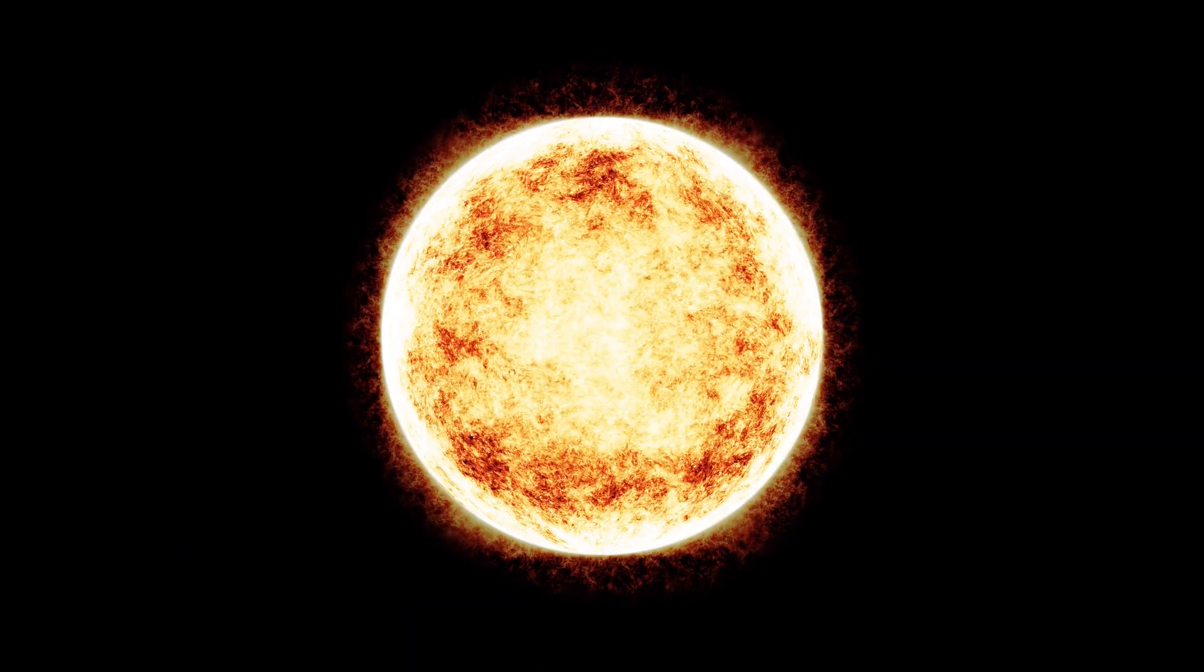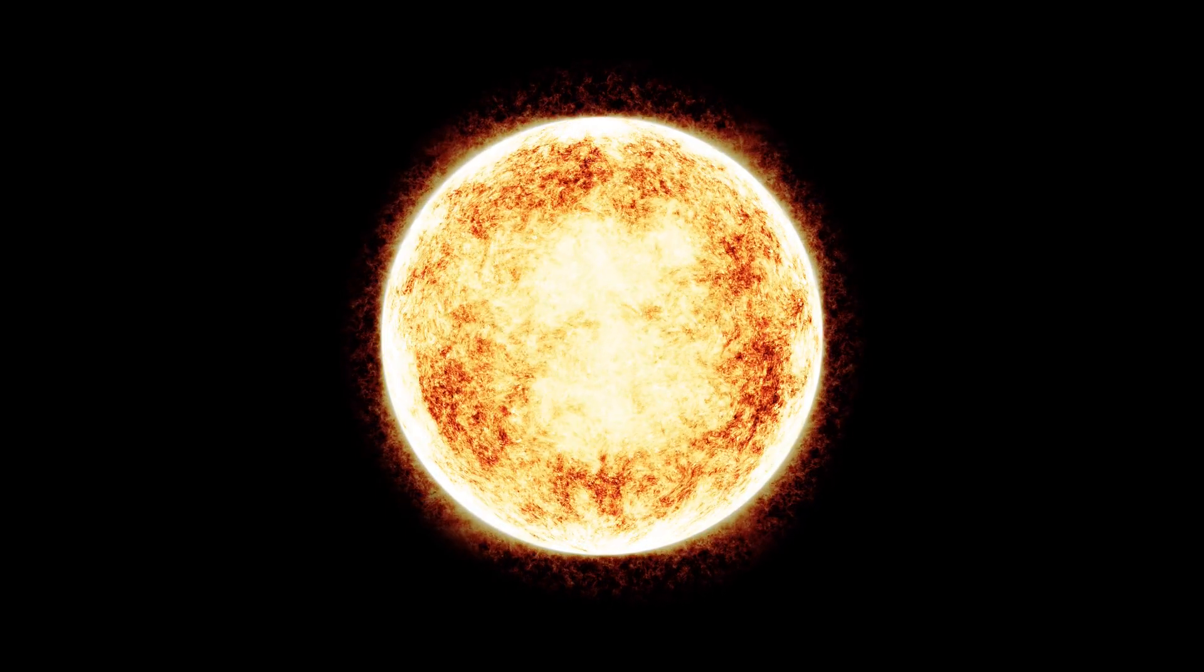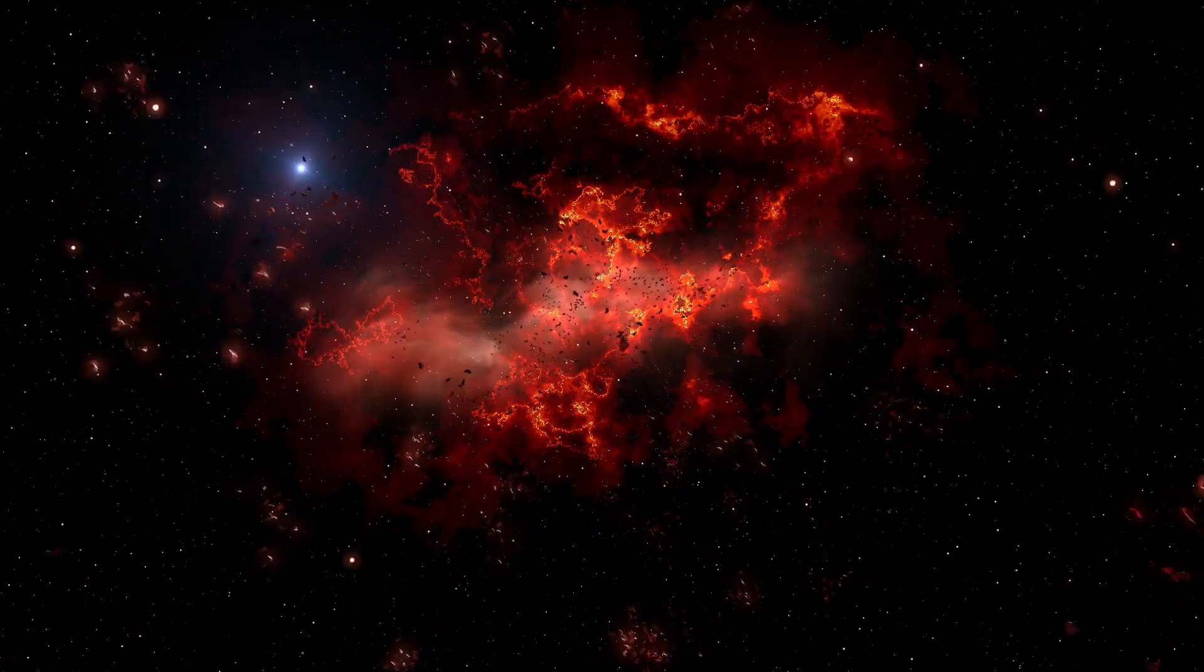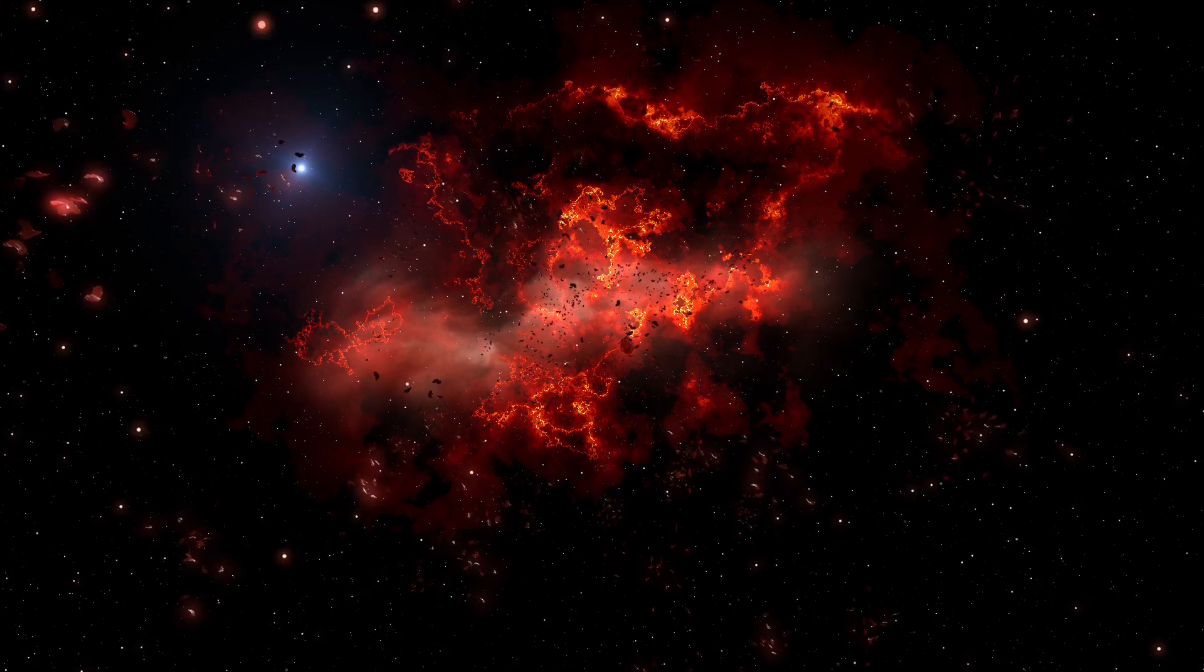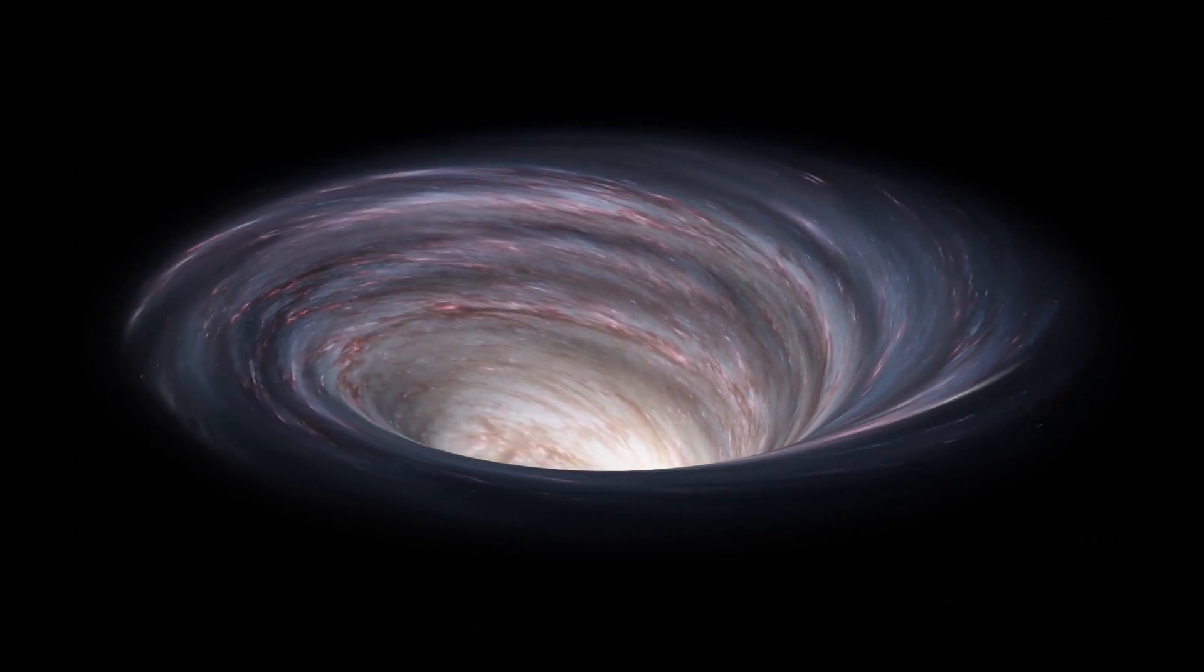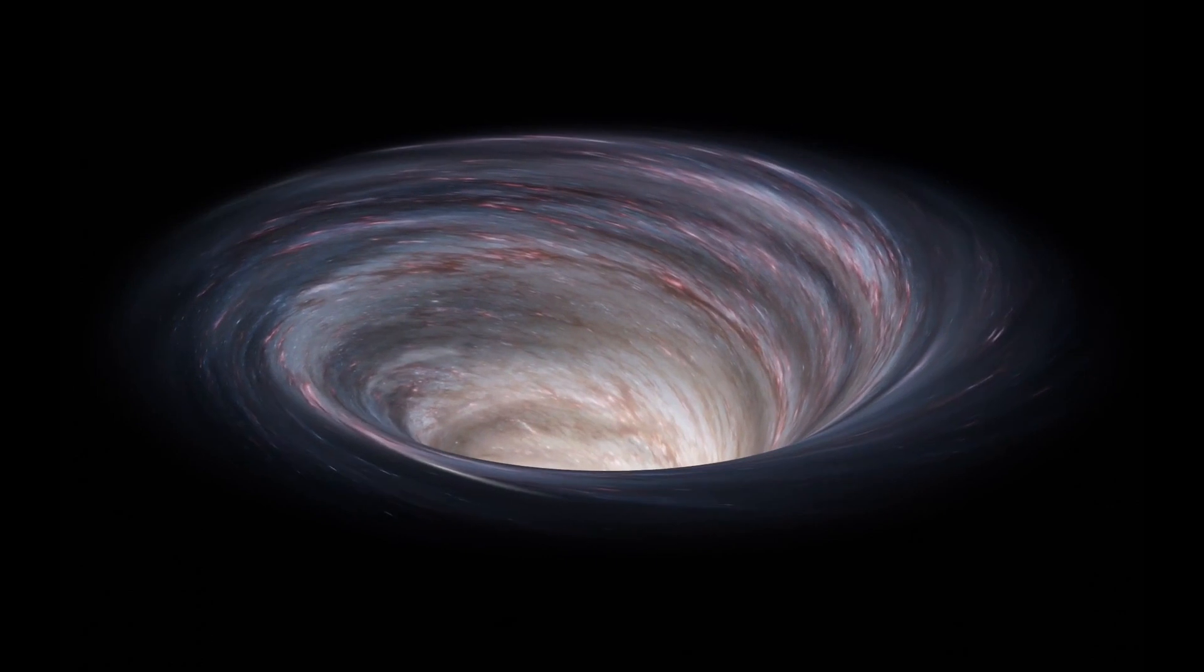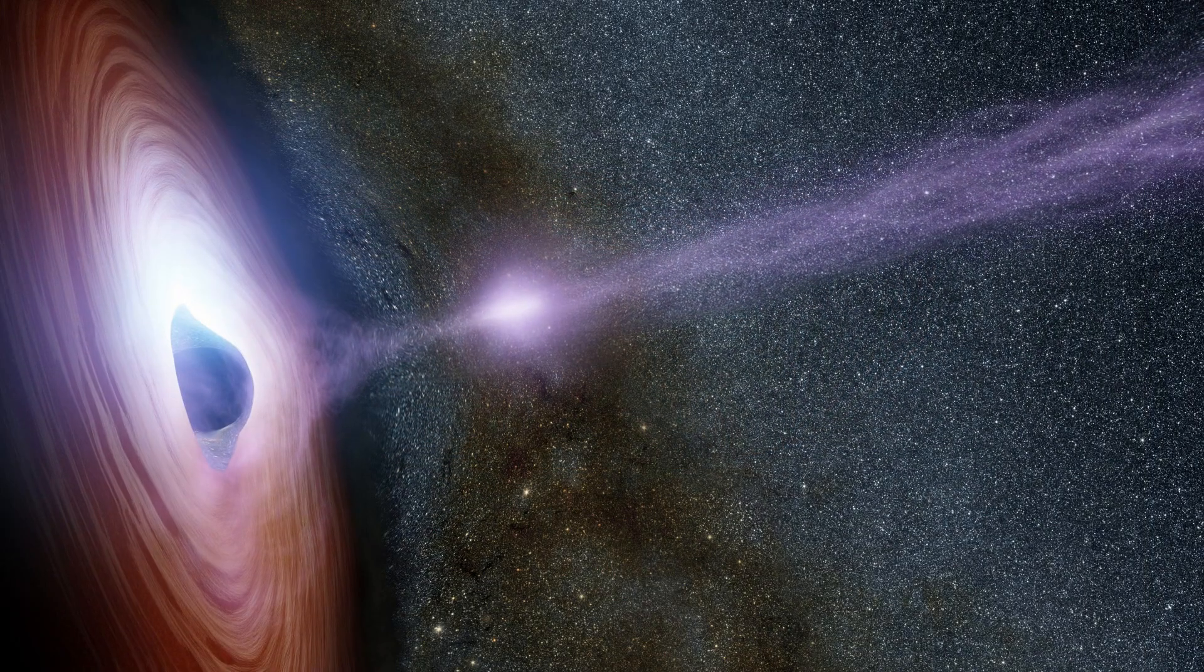But how do these gravitational giants come into being? The birth of a black hole occurs from the death of a massive star. When stars more than 25 times the size of our sun exhaust their nuclear fuel, they explode in what we call a supernova. What remains collapses under its own gravity, condensing into a point of infinite density known as a singularity, the heart of a black hole.